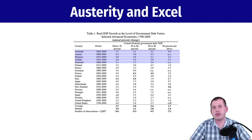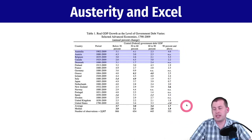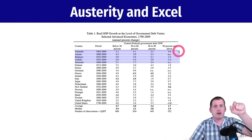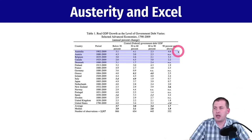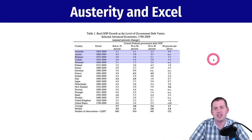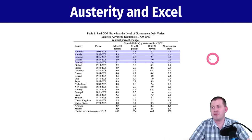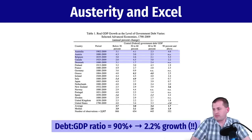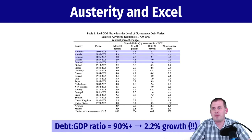When Herndon got a different number in his statistical package, he opened the Excel file and found that whoever had coded the analysis, when they wrote something like 'equals sum' for a specific set of cells, accidentally omitted five rows — Australia through Denmark. So in their calculations to get that negative 0.1% decrease in growth, they omitted five countries. Herndon added those five back in and found that a high debt-to-GDP ratio actually boosts GDP growth by about 2.2% — the exact opposite of what the paper originally argued.